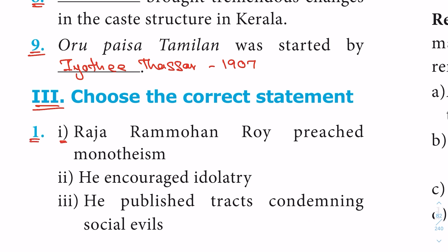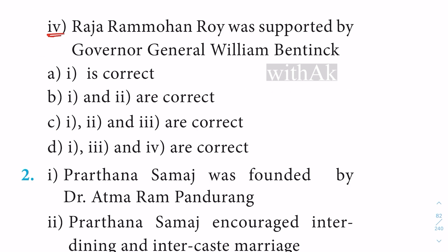Third exercise: Choose the correct statement. Question 1: Statement 1 — Raja Ram Mohan Rai preached monotheism — correct. Statement 2 — He encouraged adultery — wrong, he actually opposed such social evils. Statement 3 — He established tracts condemning social evils — correct. Statement 4 — Raja Ram Mohan Rai was supported by Governor-General William Bentinck to abolish Sati — correct. So option D: statements 1, 3, and 4 are correct.